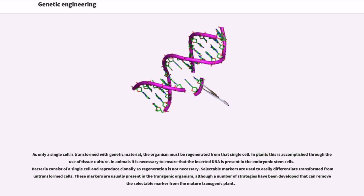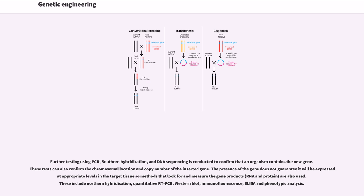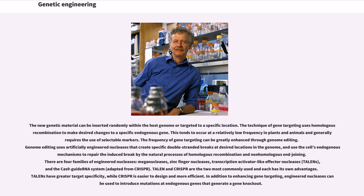As only a single cell is transformed with genetic material, the organism must be regenerated from that single cell. In plants this is accomplished through the use of tissue culture. In animals, it is necessary to ensure that the inserted DNA is present in the embryonic stem cells. Bacteria consist of a single cell and reproduce clonally, so regeneration is not necessary. Selectable markers are used to easily differentiate transformed from untransformed cells. Further testing using PCR, southern hybridization, and DNA sequencing is conducted to confirm that an organism contains the new gene, and can also confirm the chromosomal location and copy number of the inserted gene. The presence of a gene does not guarantee it will be expressed at appropriate levels in the target tissue, so methods that look for and measure the gene products, RNA and protein, are also used. These include northern hybridization, quantitative RT-PCR, western blot, immunofluorescence, ELISA, and phenotypic analysis. The new genetic material can be inserted randomly within the host genome or targeted to a specific location.